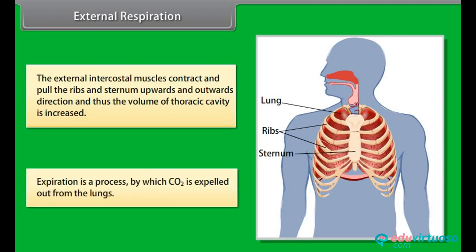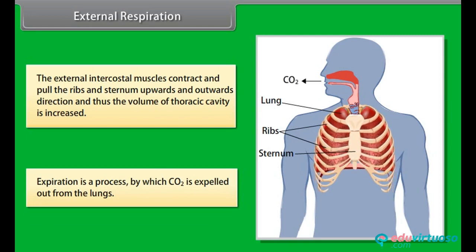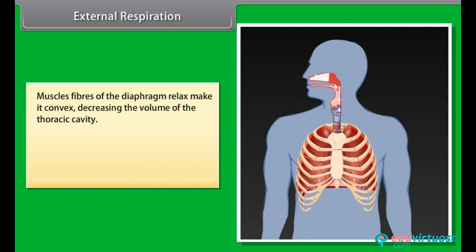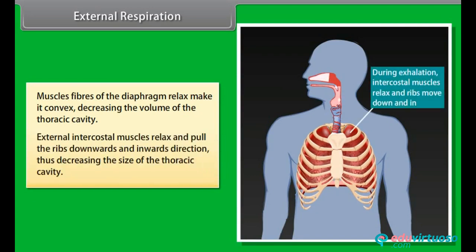Expiration is the process by which CO2 is expelled out from the lungs. Muscle fibers of the diaphragm relax, making it convex and decreasing the volume of the thoracic cavity. External intercostal muscles relax and pull the ribs downwards and inwards, thus further decreasing the size of the thoracic cavity.